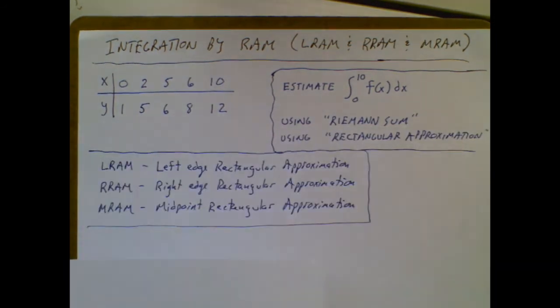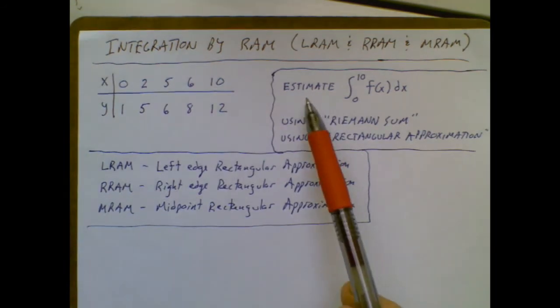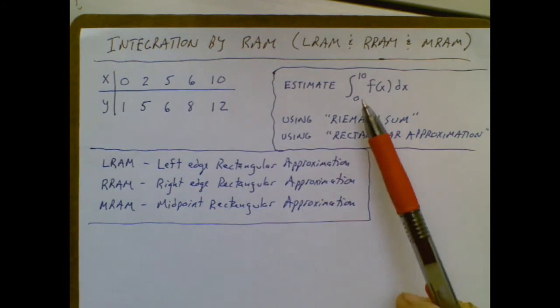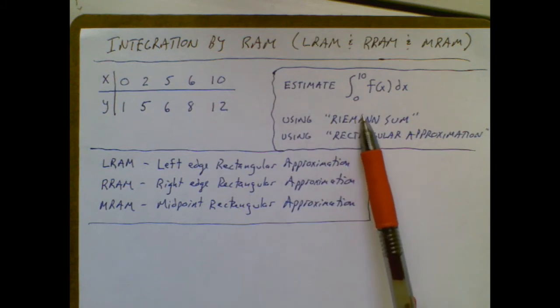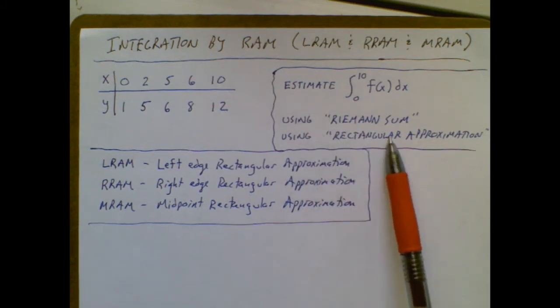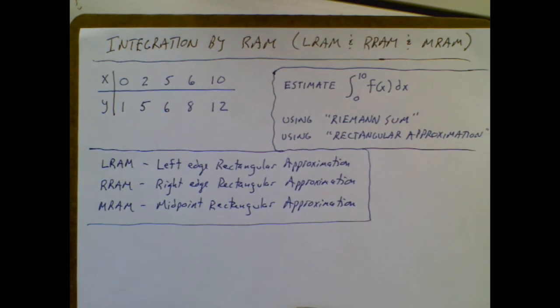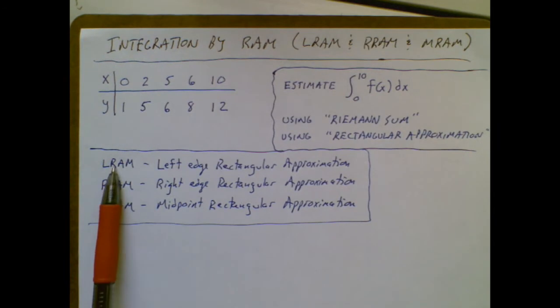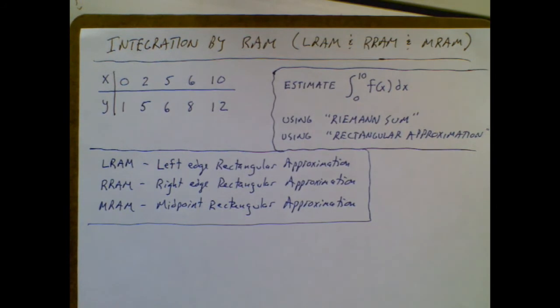So before we start the actual problem, it would be presented to you something like this. They would say, estimate this integral. And then in the instructions, they would usually say something like using a Riemann sum or using a rectangular approximation. Those are just vocabulary words to tell you to add up a bunch of rectangles. And as I've been alluding to, you could use LRAM, RRAM, or MRAM. And MRAM is quite rare. Almost always they would ask you to use LRAM or RRAM. Alright, so let's get to one of these problems.